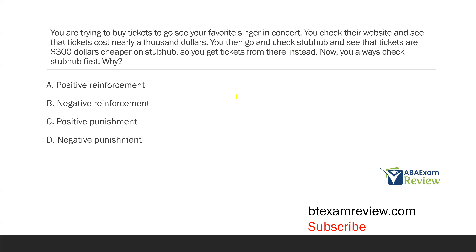You are trying to buy tickets to go see your favorite singer in concert. You check their website and see that tickets cost nearly $1,000. You then go and check StubHub and see that tickets are $300 cheaper, so you get tickets from there instead. Now you always check StubHub first. Why? We've got a consequence question. For consequences, we're looking at how future behavior changed. You check StubHub, something happened, and now you always check StubHub. Your behavior increased — you were reinforced.